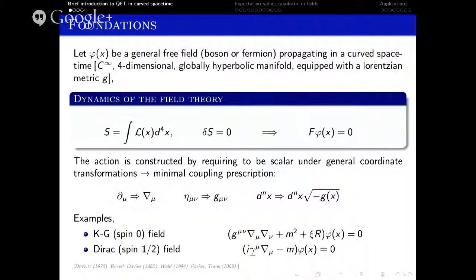Let's start by considering a generic free field in a smooth four-dimensional globally hyperbolic manifold with a Lorentzian metric. The dynamics of the field — the equation of motion — is given by the variational principle of some action. This action is constructed from the field so that it is invariant under general coordinate transformations. The simplest way to achieve that is the so-called minimal coupling prescription, which consists in doing the following substitutions: partial derivatives are changed to covariant ones, which consider the Christoffel connection or the spin connection, etc. Then the Minkowski metric is substituted by the curved spacetime metric, and so on.